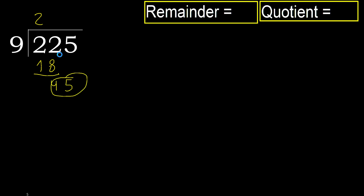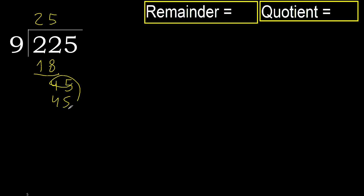45. 9 multiplied by 5 is 45. 45 is not greater. 45 minus 45 is 0, next.